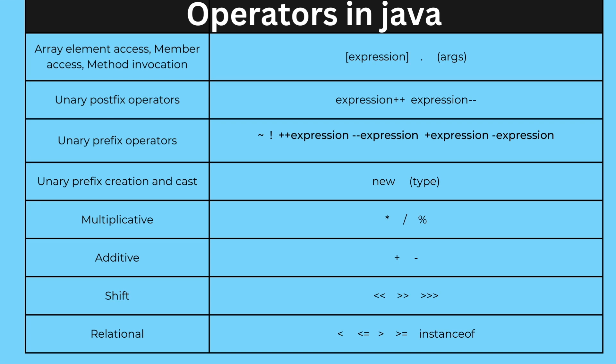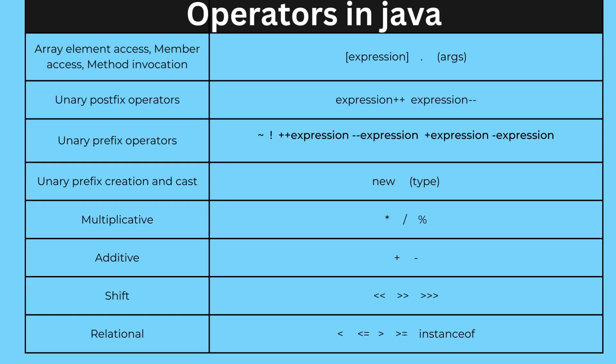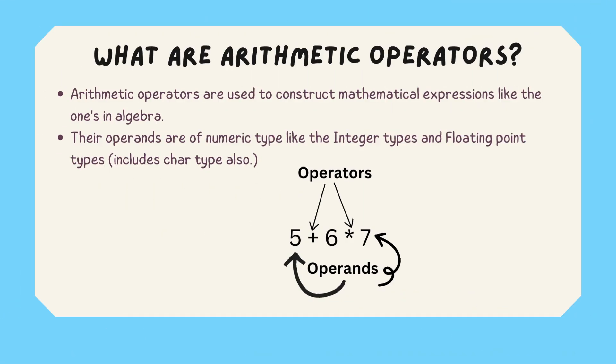Here we have all the operators in Java and the table shows the operators with decreasing precedence from top of the table to the bottom. The ones we will discuss today are the multiplicative and the additive arithmetic operators. Arithmetic operators are used to construct mathematical expressions like the ones in algebra, and the operands are usually of numeric type like integer, floating point, and character type. As you can see, 5, 6, and 7 are your operands and plus and multiplication are your operators.